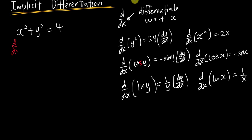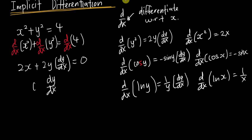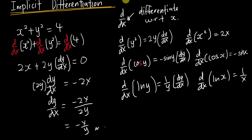Coming back to the first question — when I differentiate, I differentiate every single term. So for x² + y² = 4: differentiating x² gives 2x, differentiating y² gives 2y·dy/dx, and differentiating 4 gives 0. To find dy/dx I make it the subject: 2y·dy/dx = −2x, so dy/dx = −2x/2y, which simplifies to −x/y.